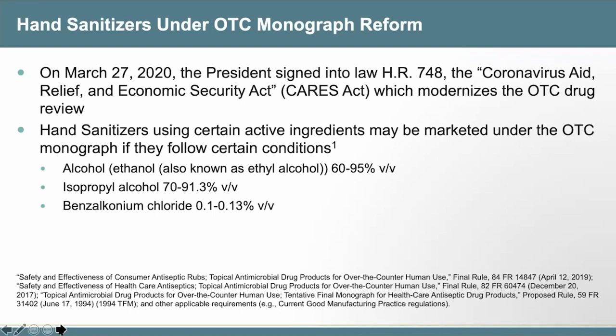The OTC monograph system was modernized in March 2020 when the President signed the CARES Act into law. With monograph reform, hand sanitizers using certain active ingredients may be marketed under OTC monographs if they follow certain conditions. The permitted OTC monograph active ingredients for hand sanitizers are ethanol, isopropyl alcohol, and benzalkonium chloride. All consumer or healthcare hand rub products containing any other active ingredients require a new drug application.